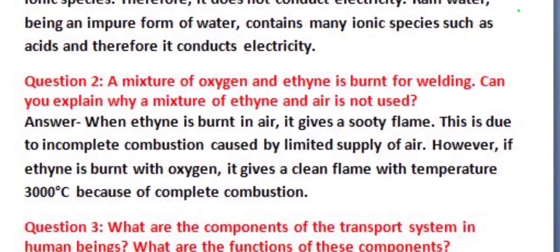Our next question is: a mixture of oxygen and ethyne is burnt for welding. Can you explain why a mixture of ethyne and air is not used? Its answer is: when ethyne is burnt in air, it gives a sooty flame. This is due to incomplete combustion caused by limited supply of air. However, if ethyne is burnt with oxygen, it gives a clean flame with temperature 3000 degree centigrade because of complete combustion.